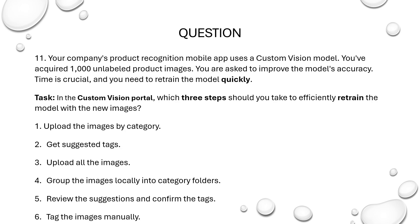Your company's product recognition mobile app uses a custom vision model. You have acquired a thousand unlabeled product images. You are asked to improve the model's accuracy. Time is crucial and you need to retrain the model quickly. In the Custom Vision portal, which three steps should you take to efficiently retrain the model with the new images?